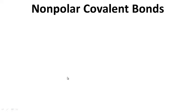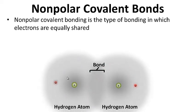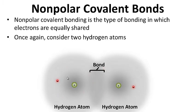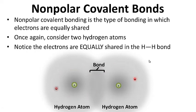Non-polar covalent bonding is the type of bonding in which electrons are equally shared. Consider our two hydrogen atoms again — notice the electrons are equally shared between the two hydrogen atoms. This results in a non-polar covalent bond. So in H2, and in most diatomic molecules, we have non-polar covalent bonds where the electrons are equally shared.